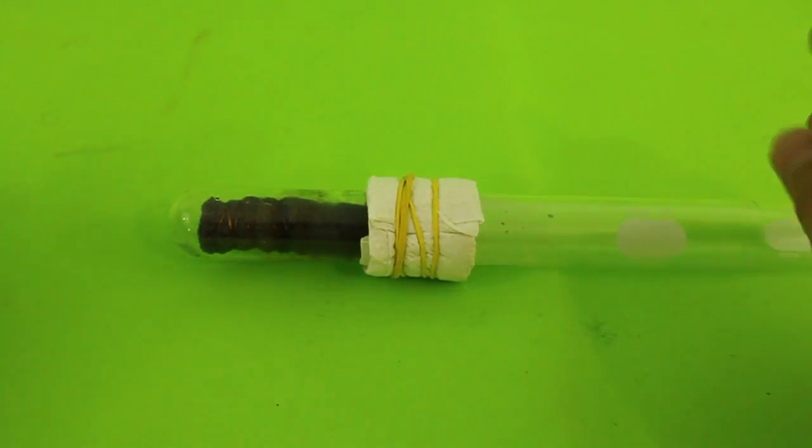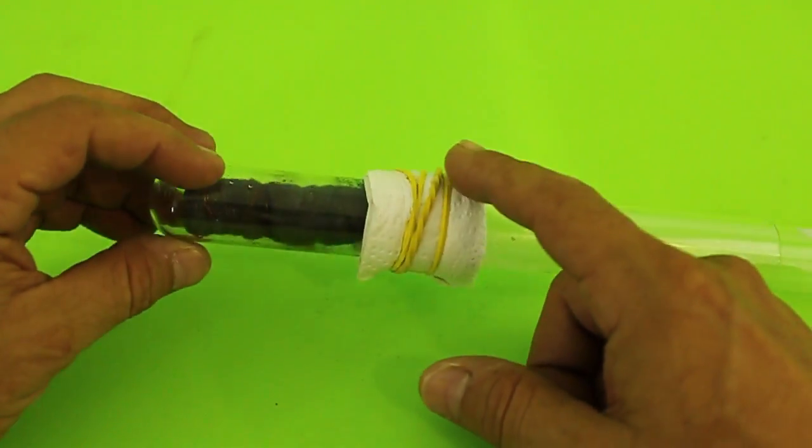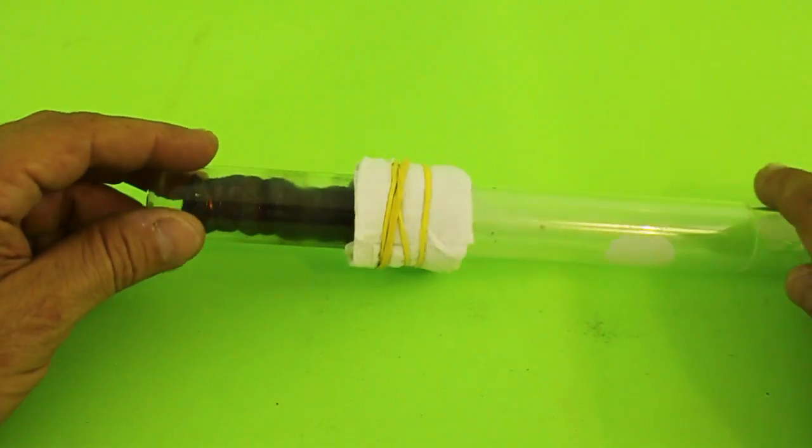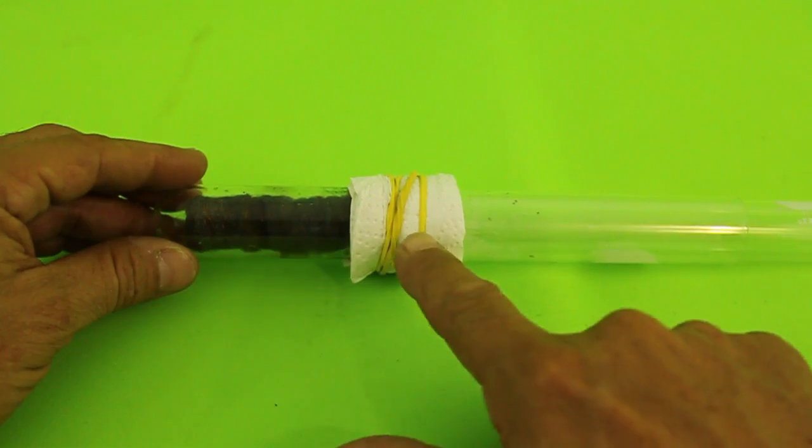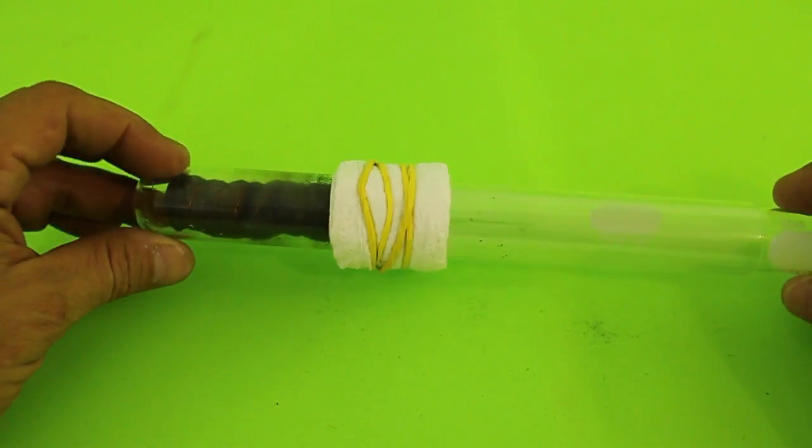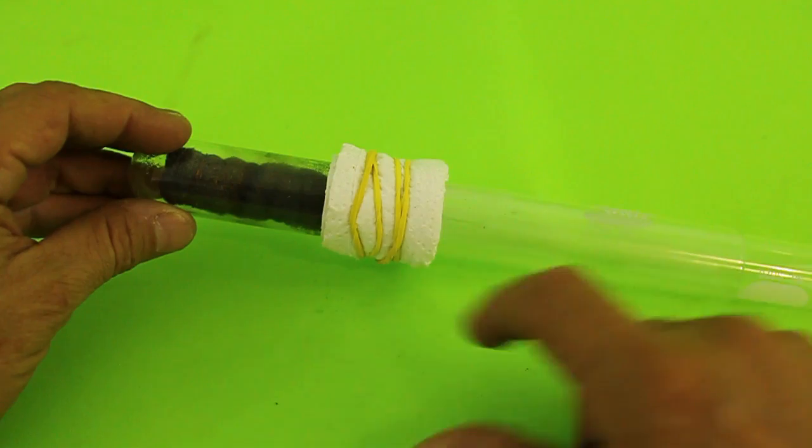For that, fold and wrap a paper towel from your kitchen around the test tube on the cold side area and secure it using a rubber band.